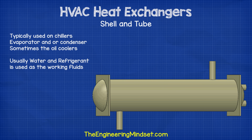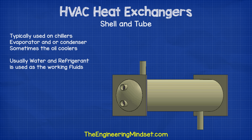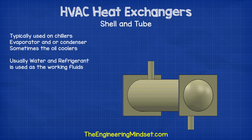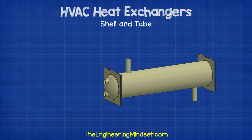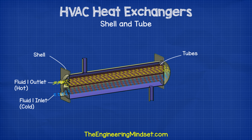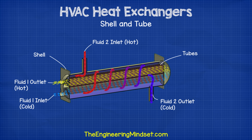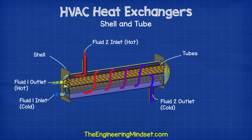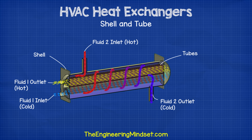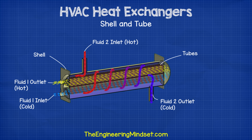Shell and tube heat exchangers are typically found on chillers for the evaporator and/or condenser, and sometimes for lubricating oil cooling. They have an outer container known as the shell, with a number of pipes known as tubes sitting inside. The tubes contain one fluid and the shell contains another; the two fluids are always separated by the tube walls and never mix. The temperature difference between the fluids causes thermal energy to transfer through the tube walls. When used as an evaporator or condenser, the two fluids will be water and refrigerant.